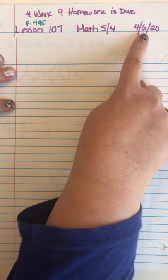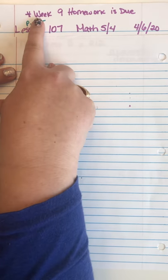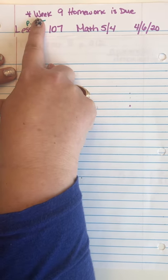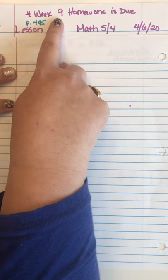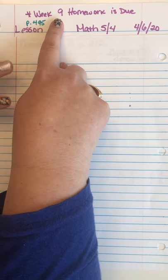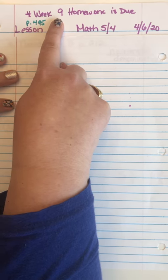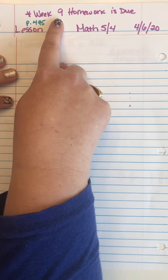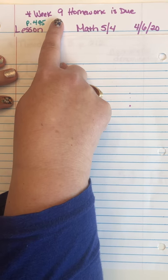As a reminder, since April 6th is a Monday, your homework for week 9 — your assignment sheet for week 9 — is due today. Have your parents sign it and fill it all in, and they can email it to me, text it to me, or attach it to the Google Classroom assignment.